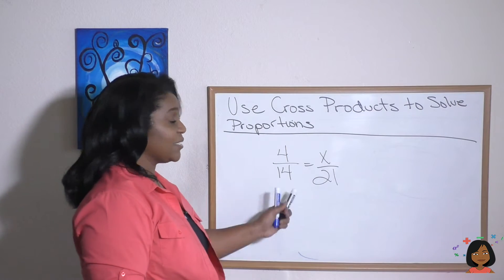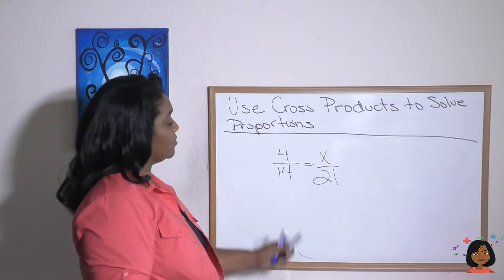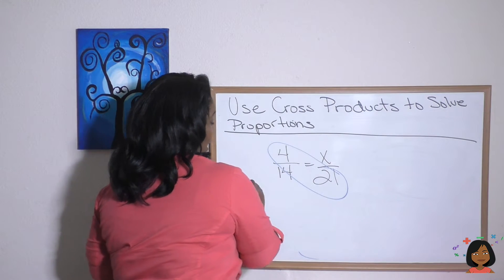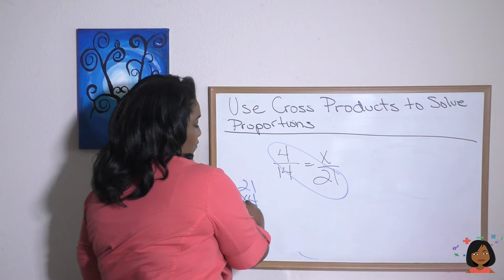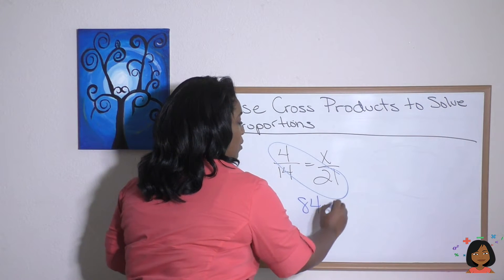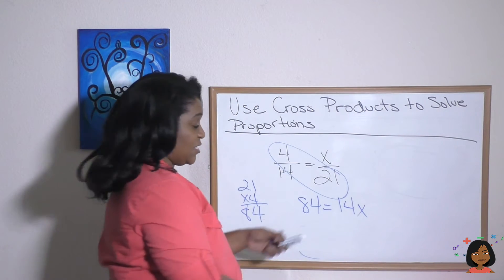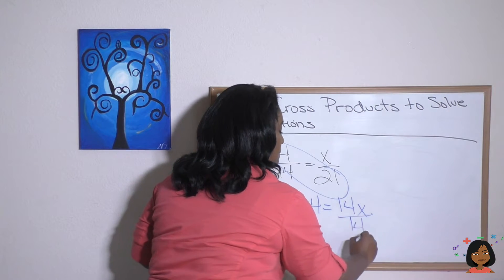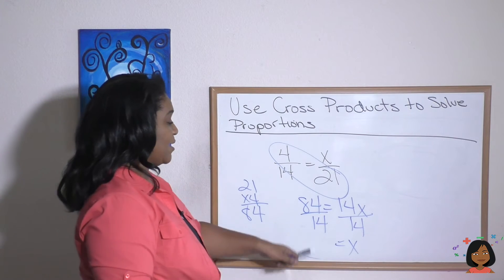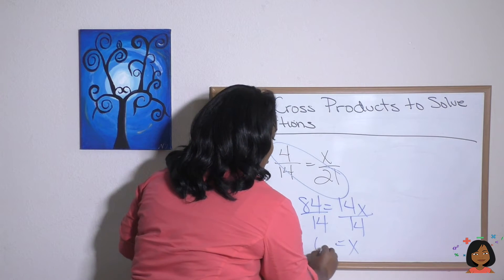Now, let's see if we can find this missing number using our cross products. I'm going to do 21 times four. I'll do it over to the side. 21 times four is 84 equals 14 times X. Well, this is a missing number in multiplication, which means I divide. I end up with X on this side and then 84 divided by 14 should be six.